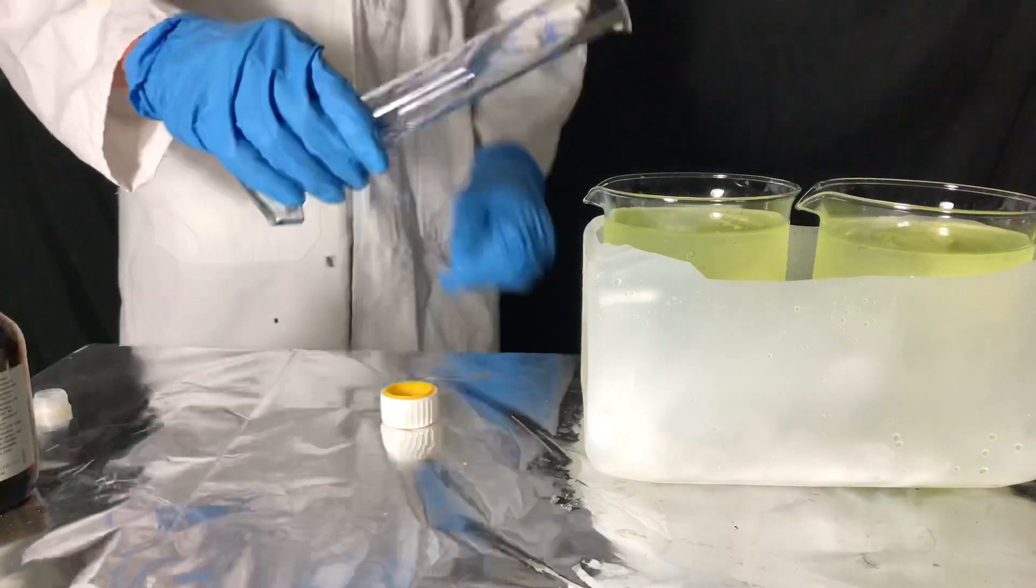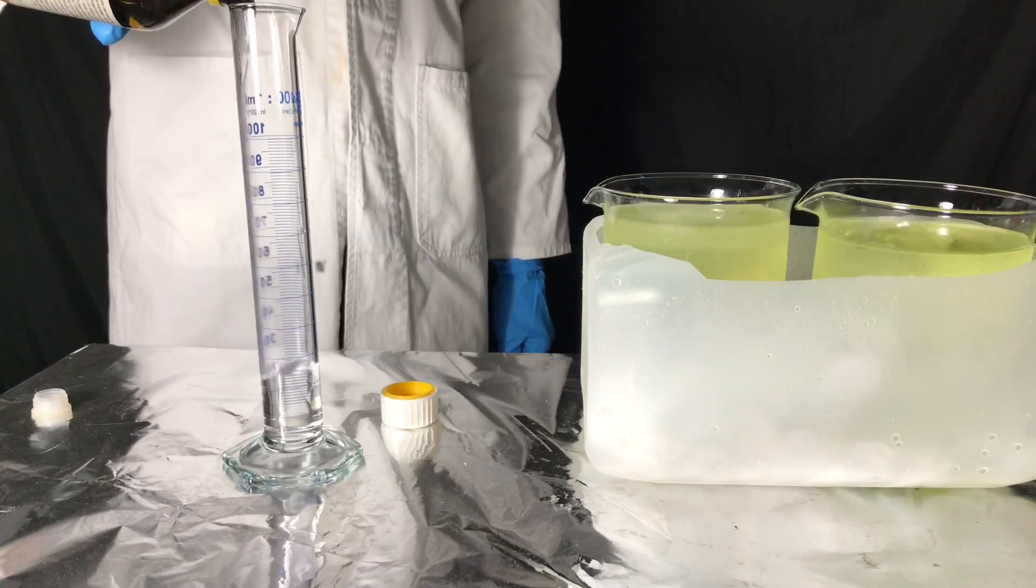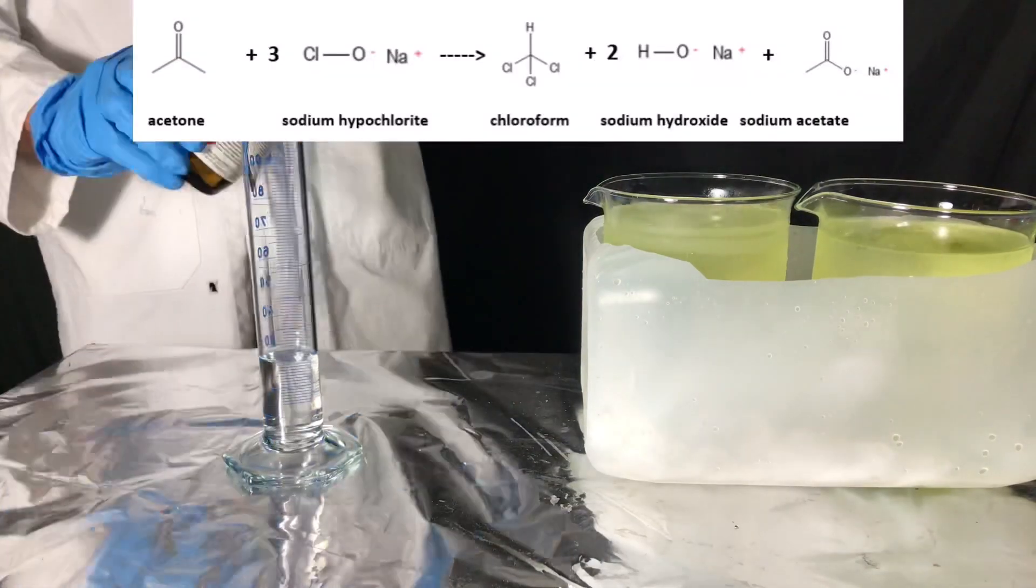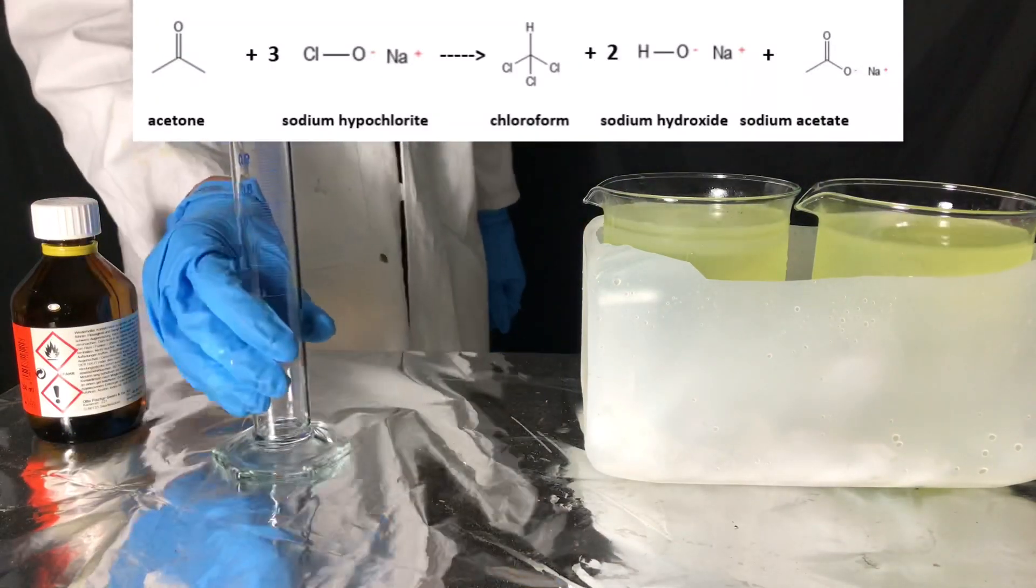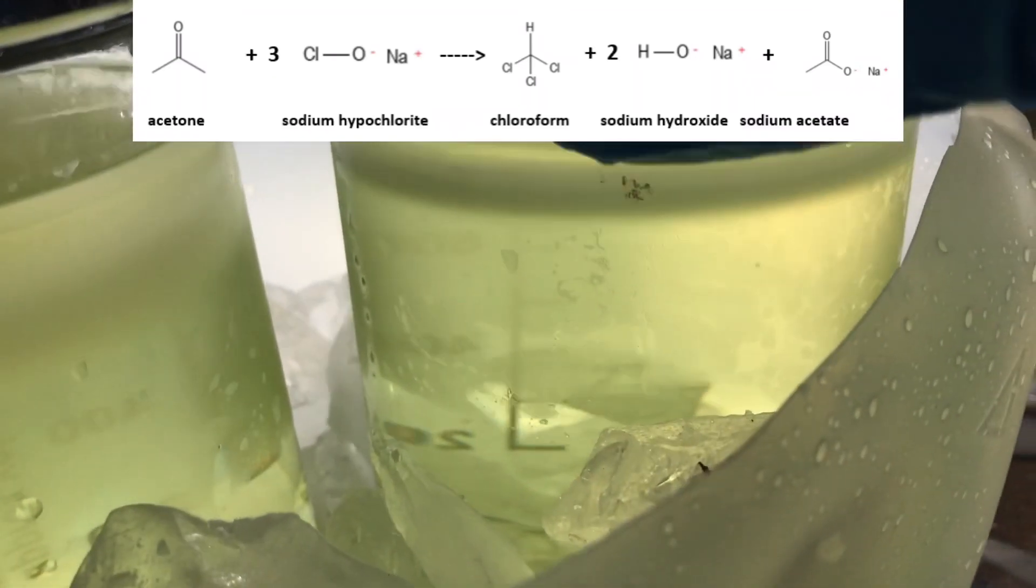The reaction that will occur when sodium hypochlorite reacts with acetone is known as the haloform reaction. In this case with acetone, chloroform, sodium hydroxide, and sodium acetate will be formed.